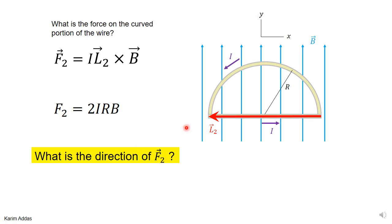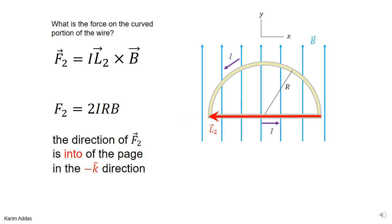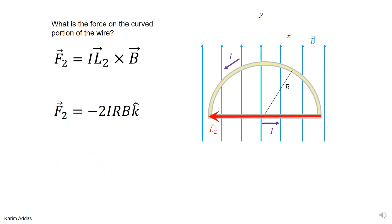Now what's the direction of the force on the curved part? L2 is pointing to the left and B is pointing upward. When you compute L2×B, the result is into the page, which is in the −k̂ direction based on these coordinates.